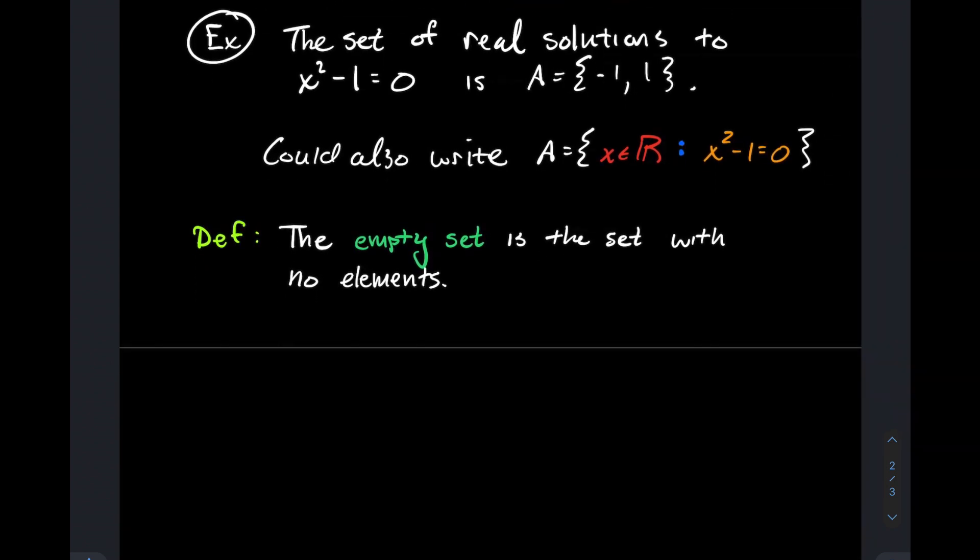Definition: the empty set is a special set, defined as the set with no elements, and there are two common notations for it. Sometimes people denote it by curly brackets with nothing between them—you know it's empty. Another more common one that I use more often is the circle with the slash through it. I typically reserve the circle with the slash for the empty set and not for the number zero.